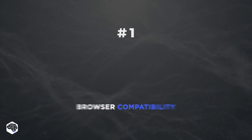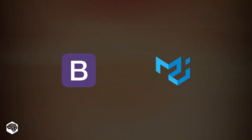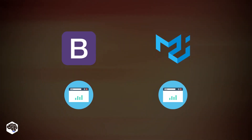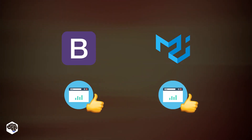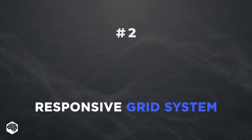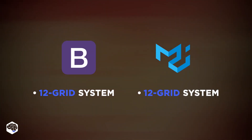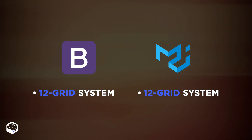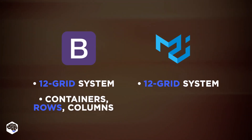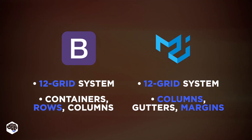The first aspect is browser compatibility. In this category, Bootstrap and Material are evenly matched, as both provide developers with a website that seamlessly adapts to different browsers. The second aspect to consider is the responsive grid system. These two design tools use a 12-column grid system with similar structure and class names. The Bootstrap grid system uses containers, rows, and columns, while Material's 12-column grid system uses columns, gutters, and margins.